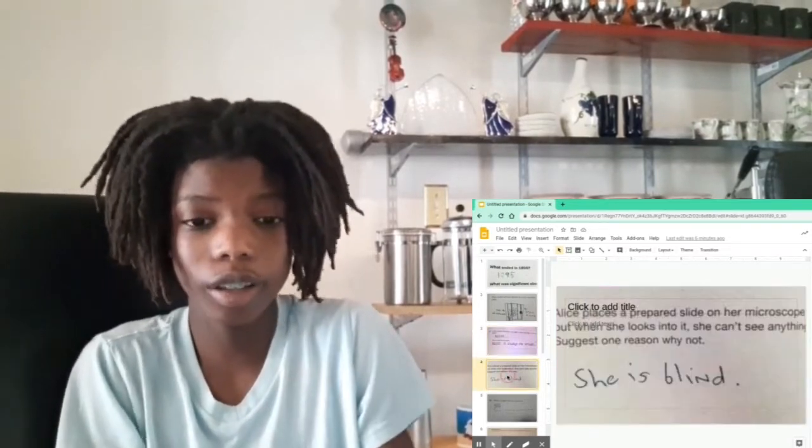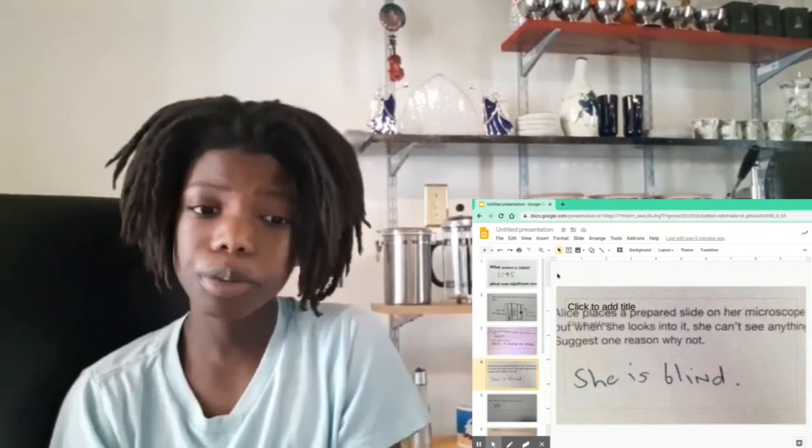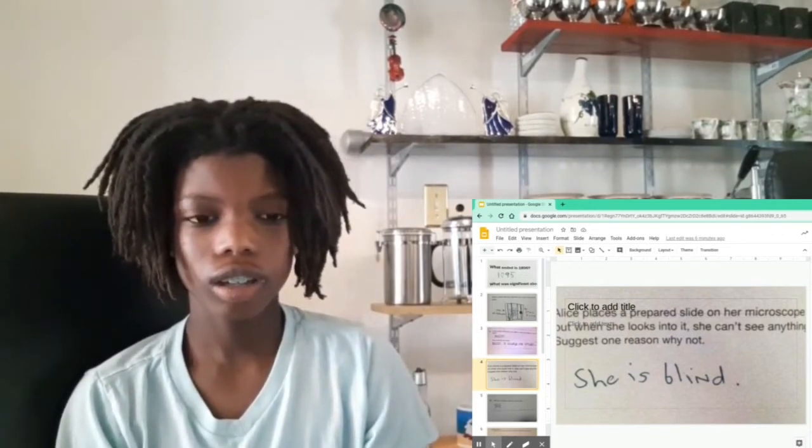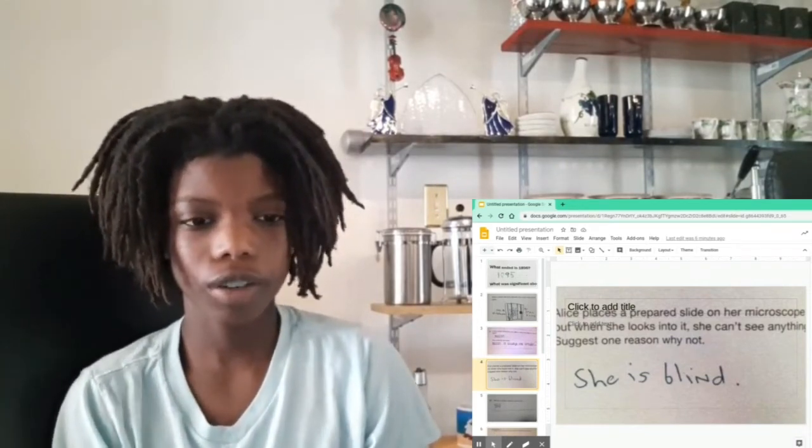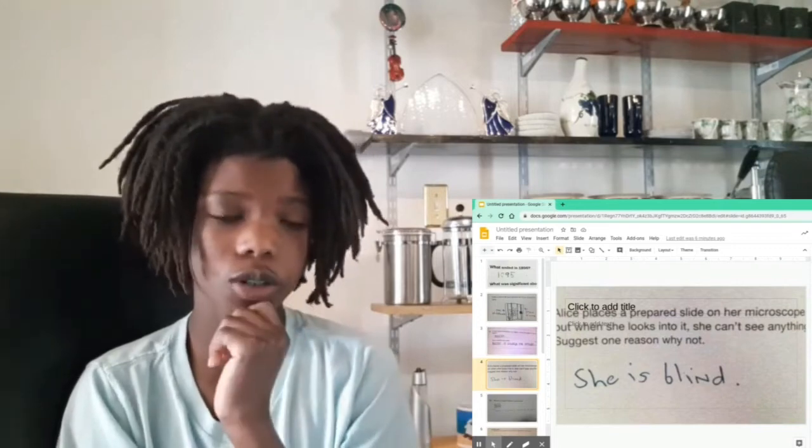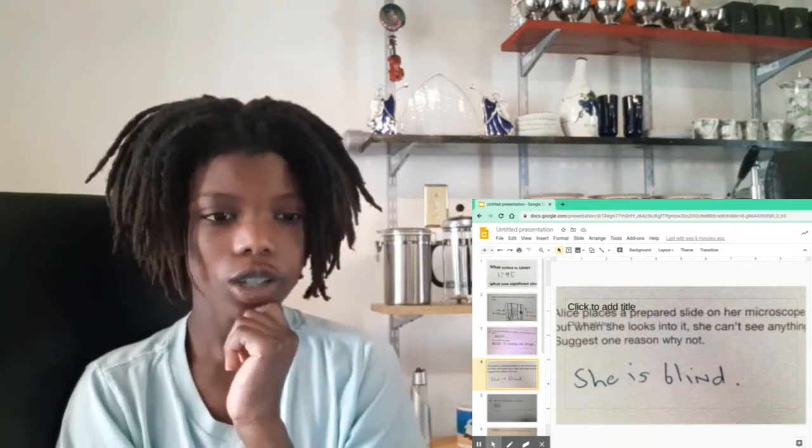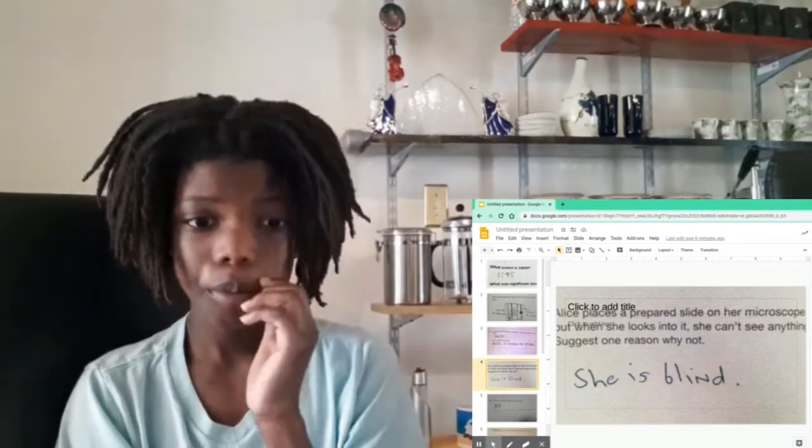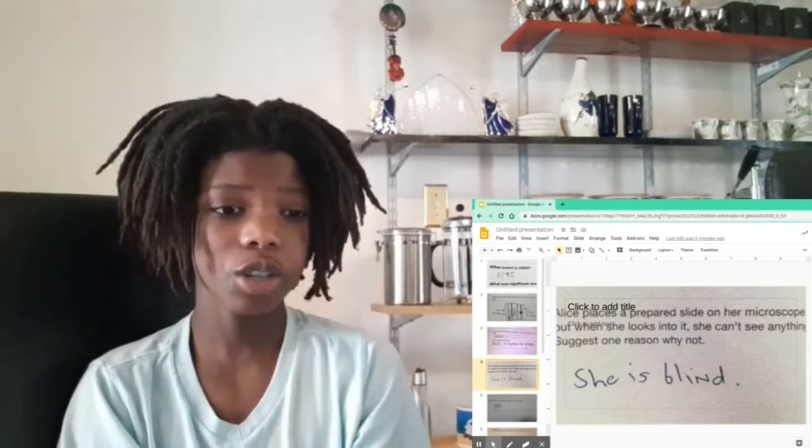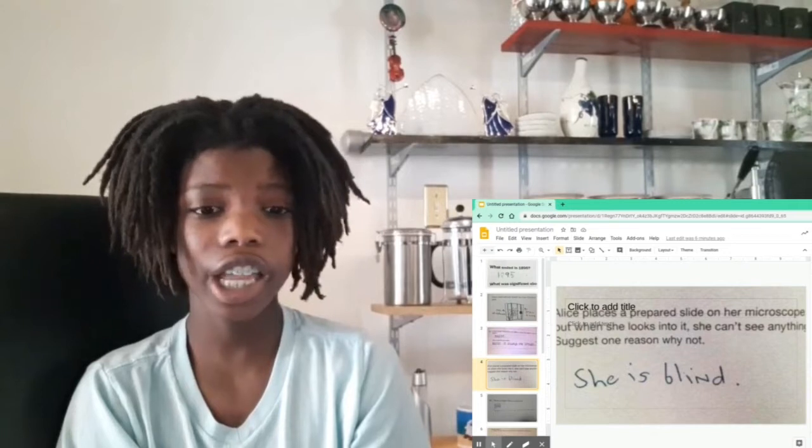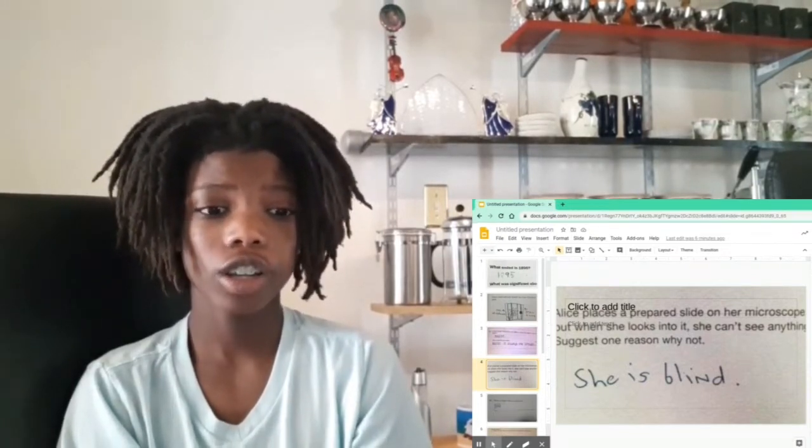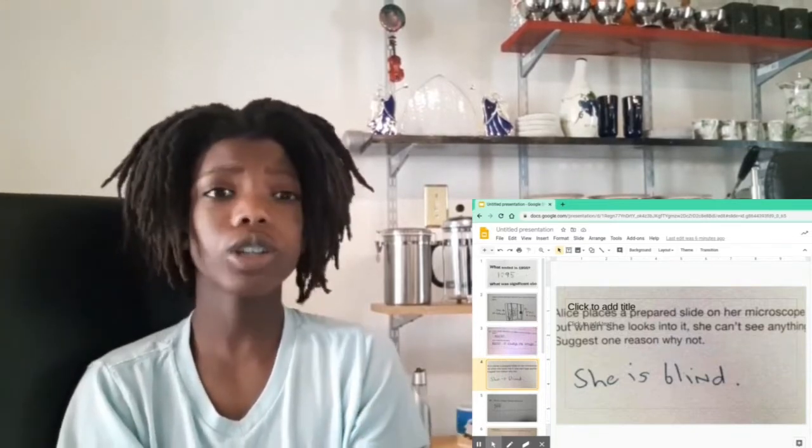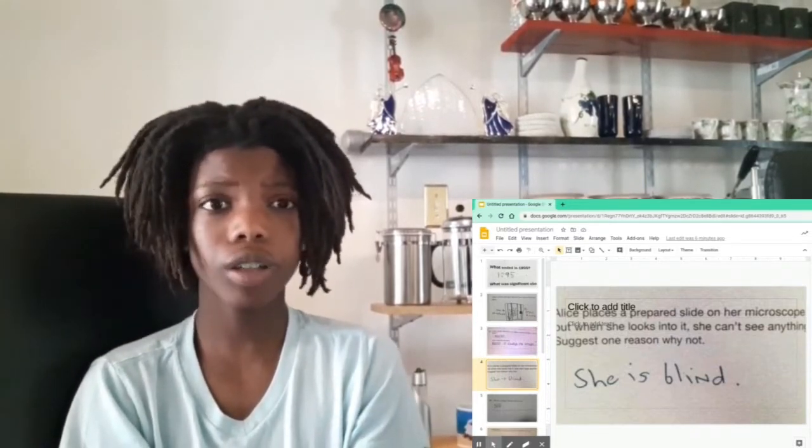Alice prepared a slide on her microscope but when she looked into it she cannot see anything. Suggest one reason why not. She is blind. Why would she look in a microscope if she's blind? Come on people.